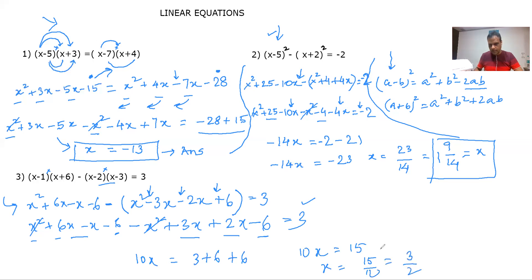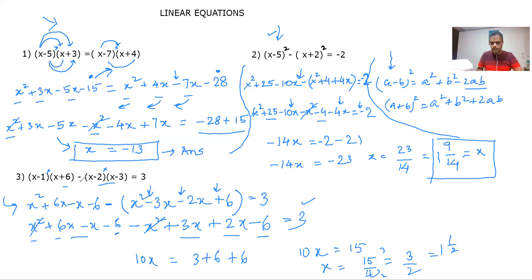15/10 simplifies: 5 × 3 = 15, 5 × 2 = 10, so x = 3/2, which equals 1 and 1/2. So x = 1½, and this is how we solve the linear equation.